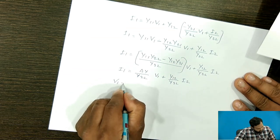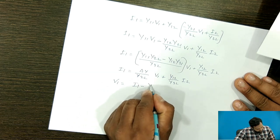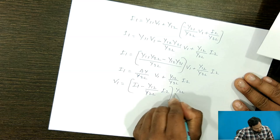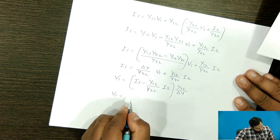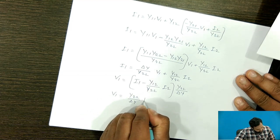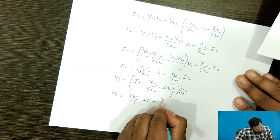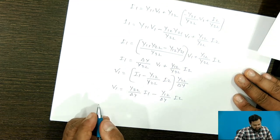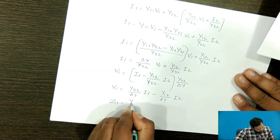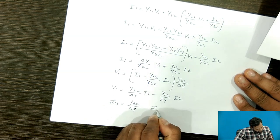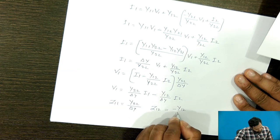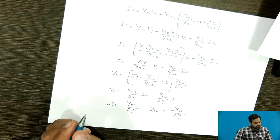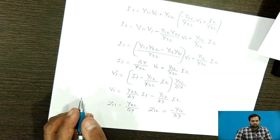Solving for V1: V1 = (Y22 / ΔY)·I1 - (Y12 / ΔY)·I2. Comparing with the Z parameter equations, we find Z11 = Y22 / ΔY and Z12 = -Y12 / ΔY. In this way, we can express all Z parameters in terms of Y parameters. As a reference, Circuit Theory Analysis and Synthesis by A. Chakravarti has been used.